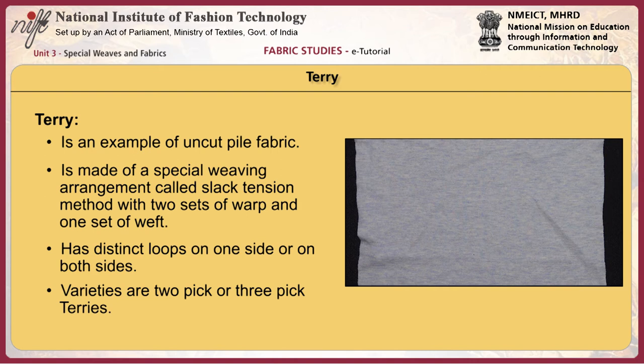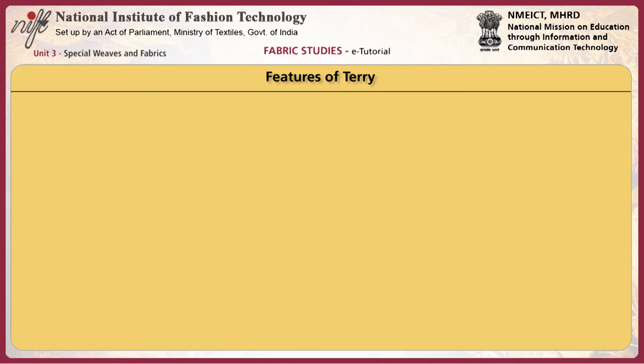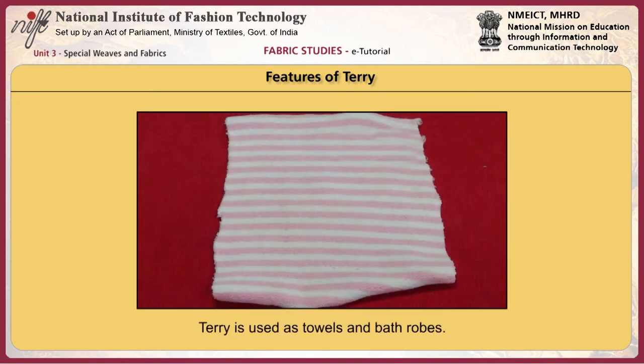The fabric has distinct loops on one side or both sides of the fabric. The usual varieties of terry cloth are two-pick or three-pick terries. Terry fabrics are made more durable with polyester cotton blend and combed pile loops. The loop yarns are made with low twist combed yarns, thus contributing to fabric absorbency.